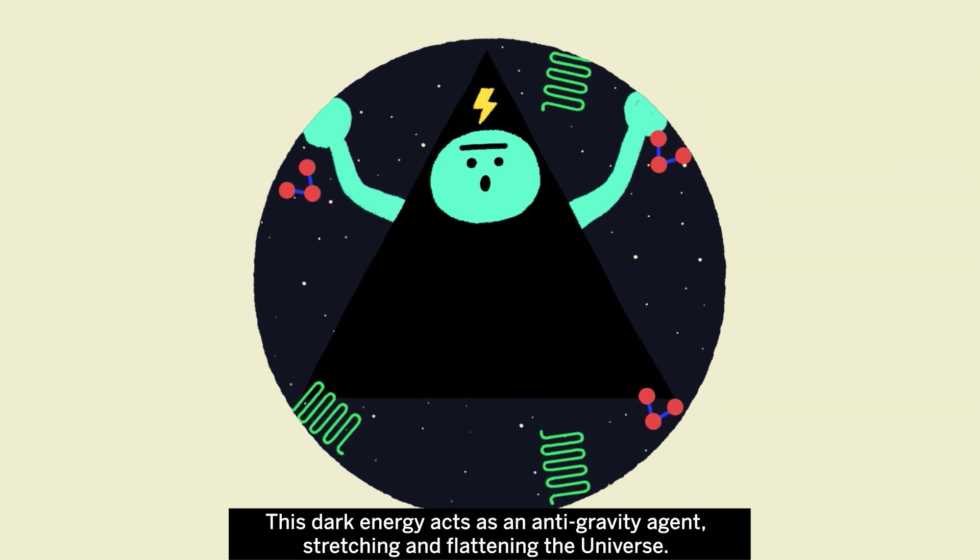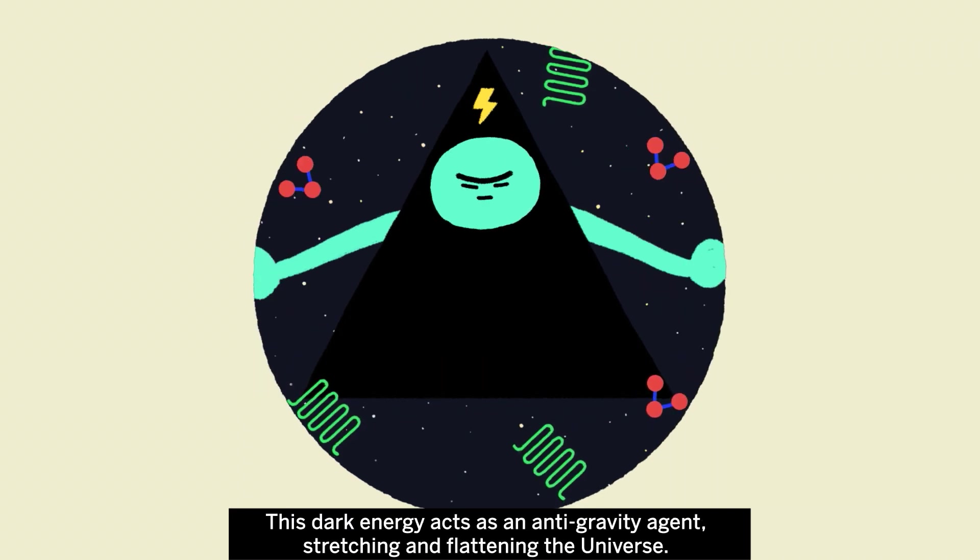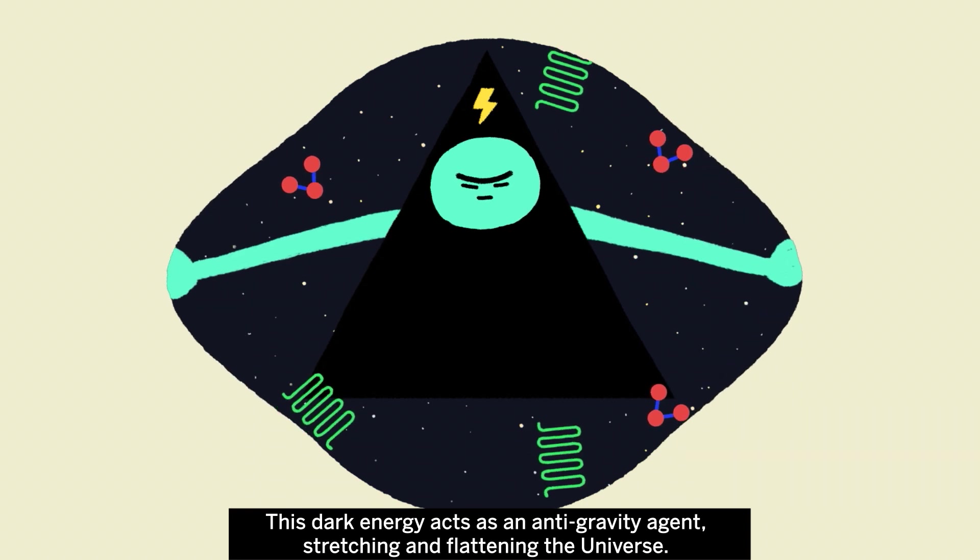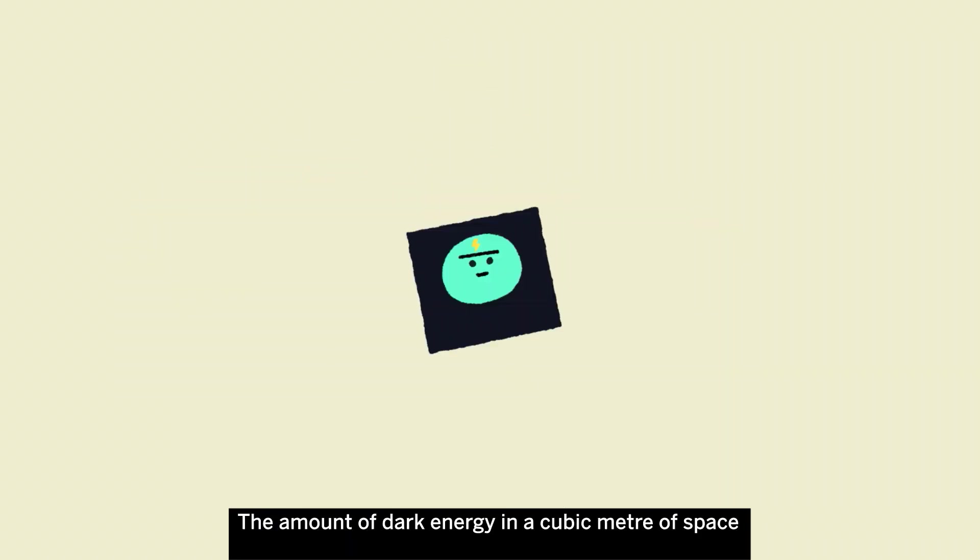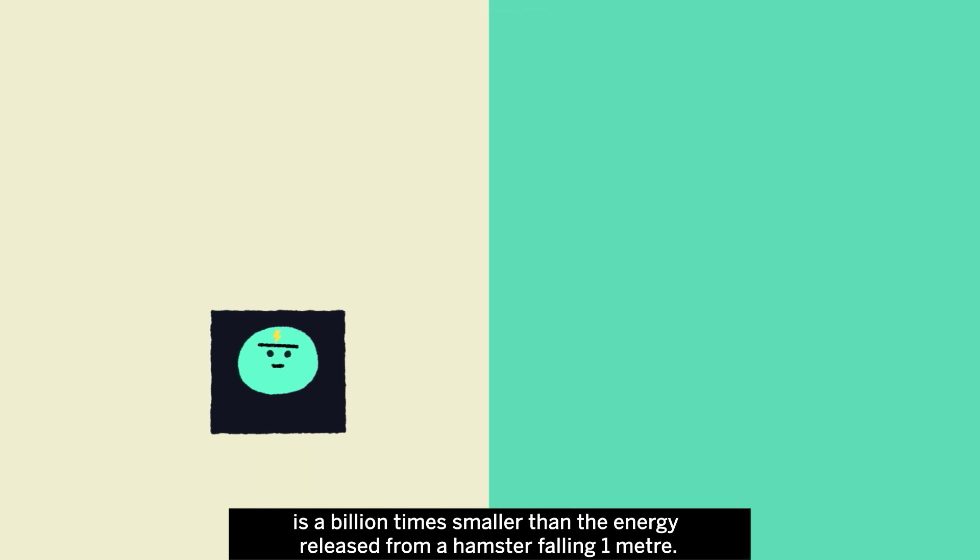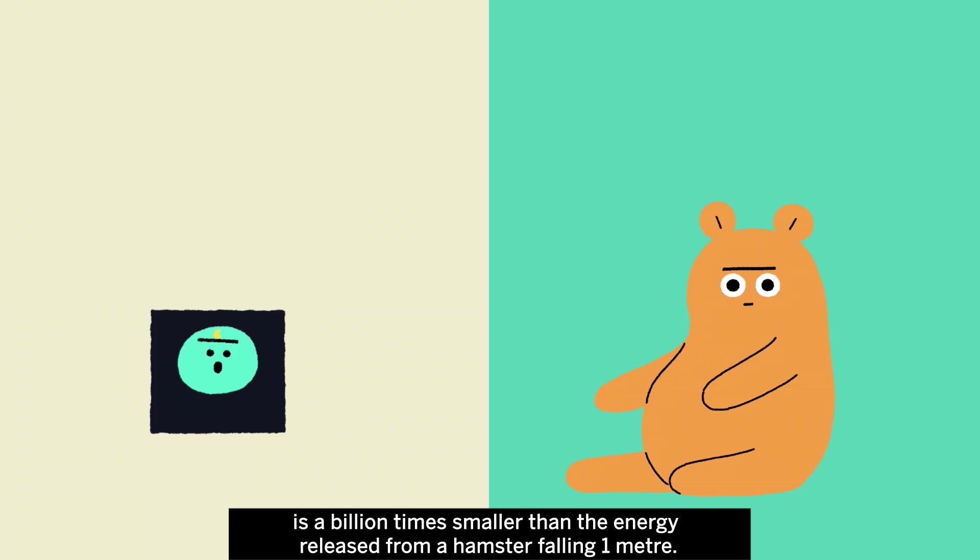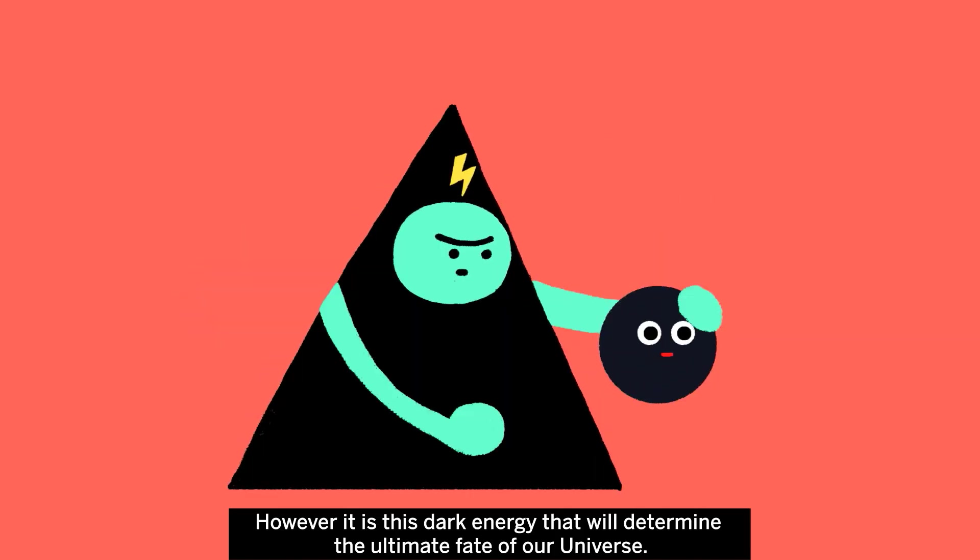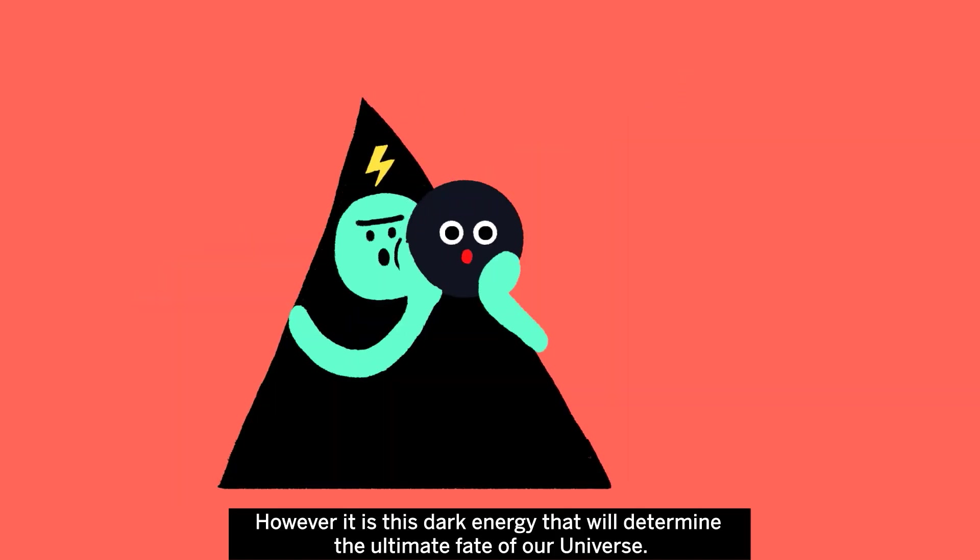This dark energy acts as an anti-gravity agent, stretching and flattening the universe. The amount of dark energy in a cubic metre of space is a billion times smaller than the energy released from a hamster falling one metre. However, it is this dark energy that will determine the ultimate fate of our universe.